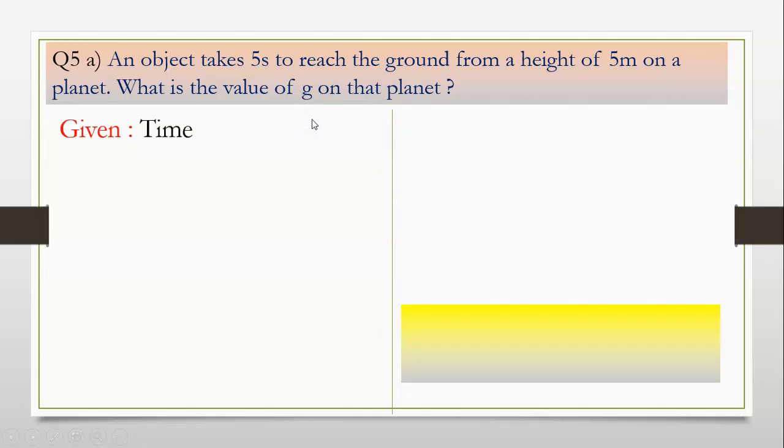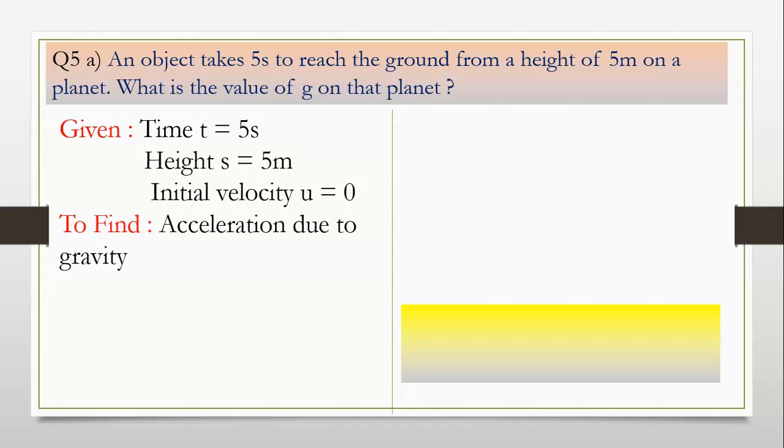What is given? Time taken t is equal to 5 seconds. Height s is 5 meters. Initial velocity u is 0 as the motion of the object is downward. To find out: acceleration due to gravity g. Formula: S is equal to ut plus half gt square. This is your second equation of motion.